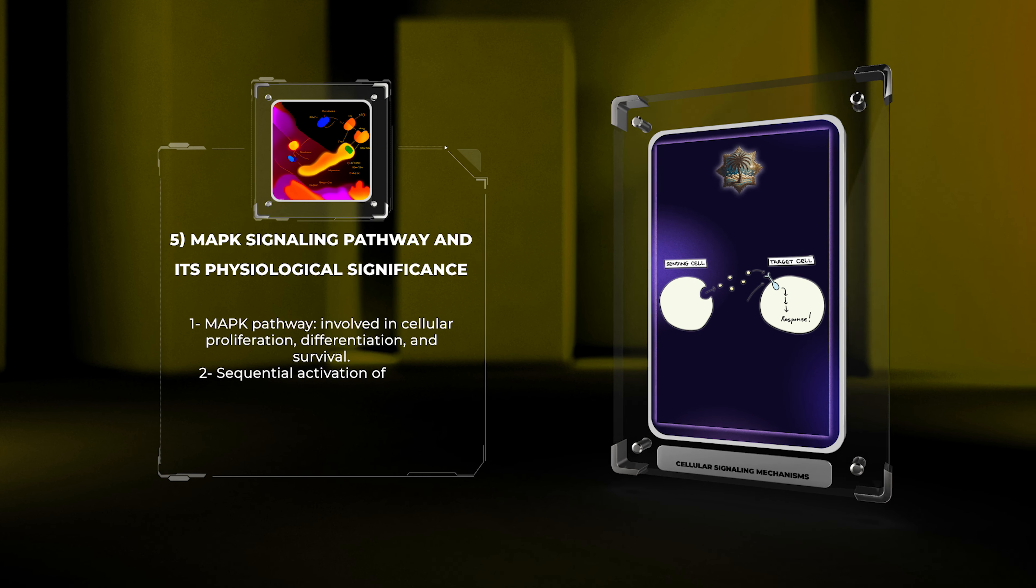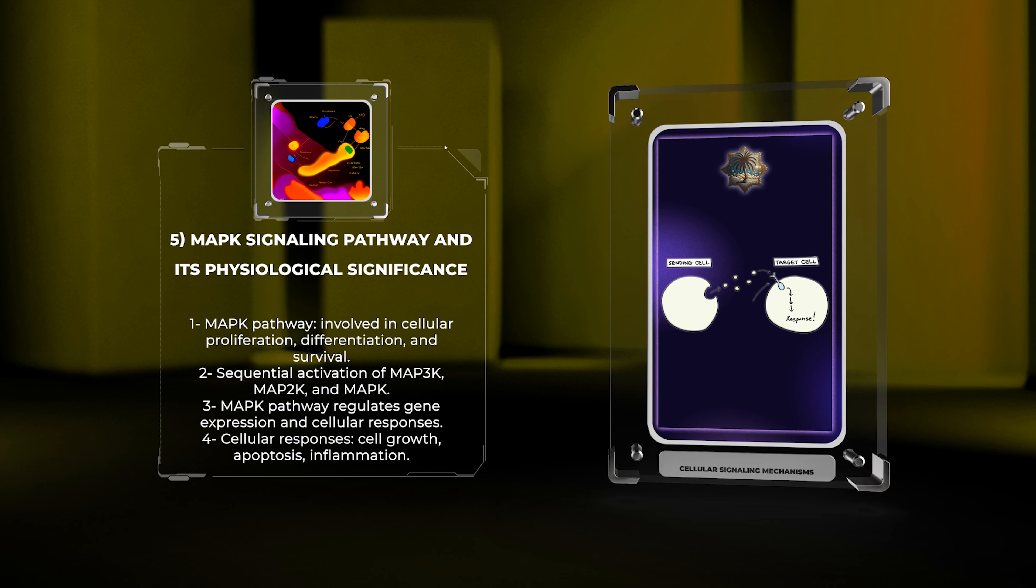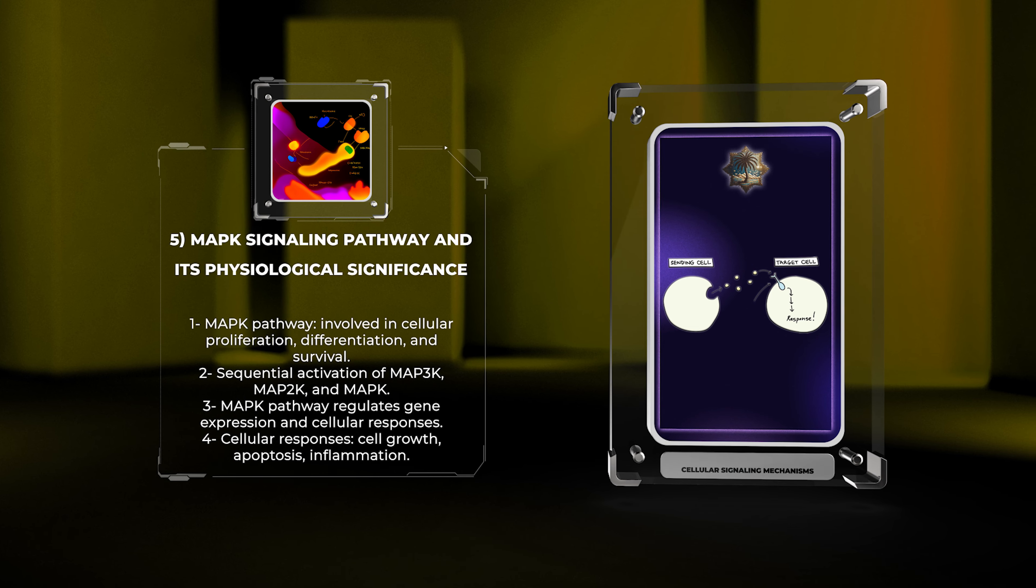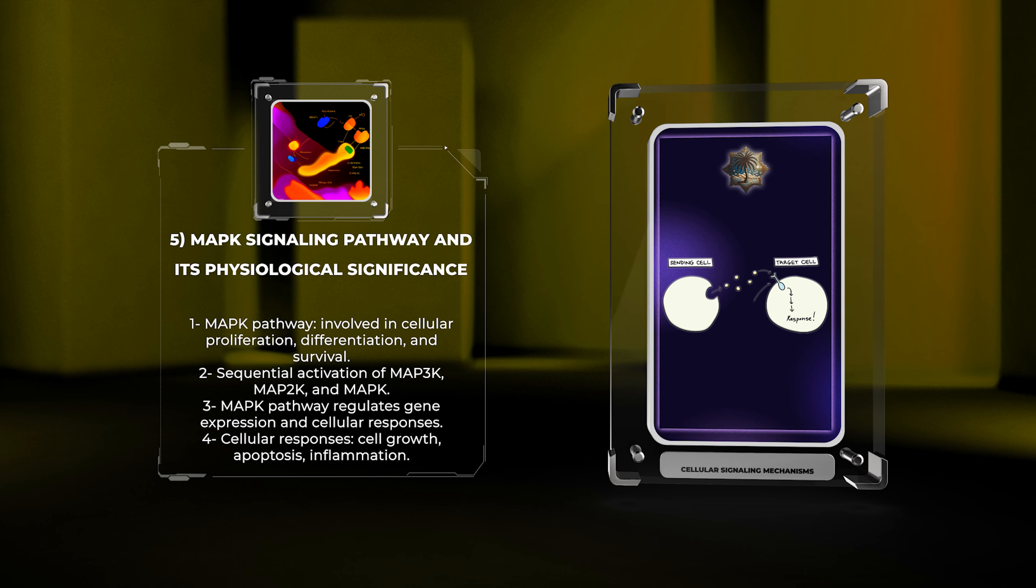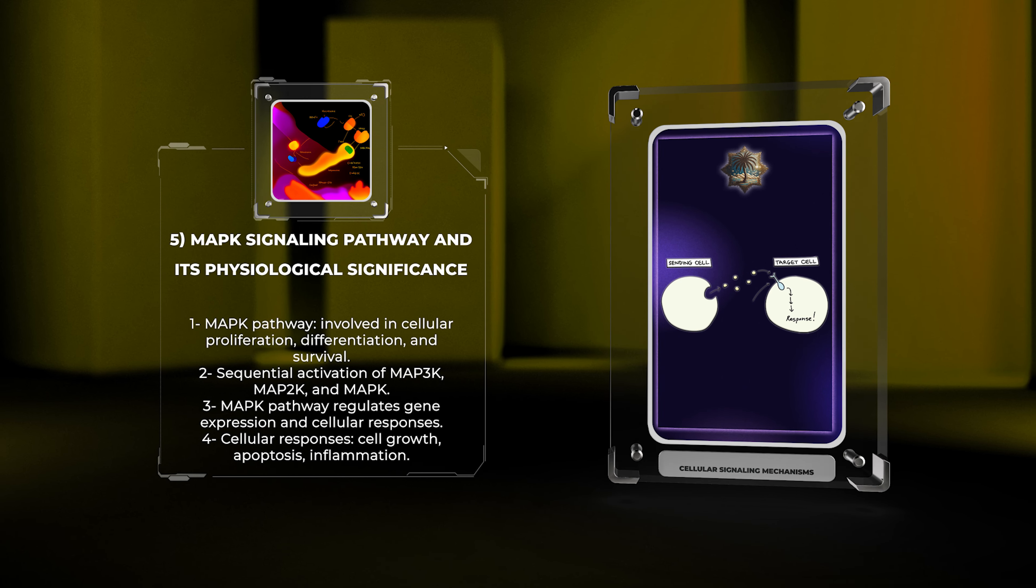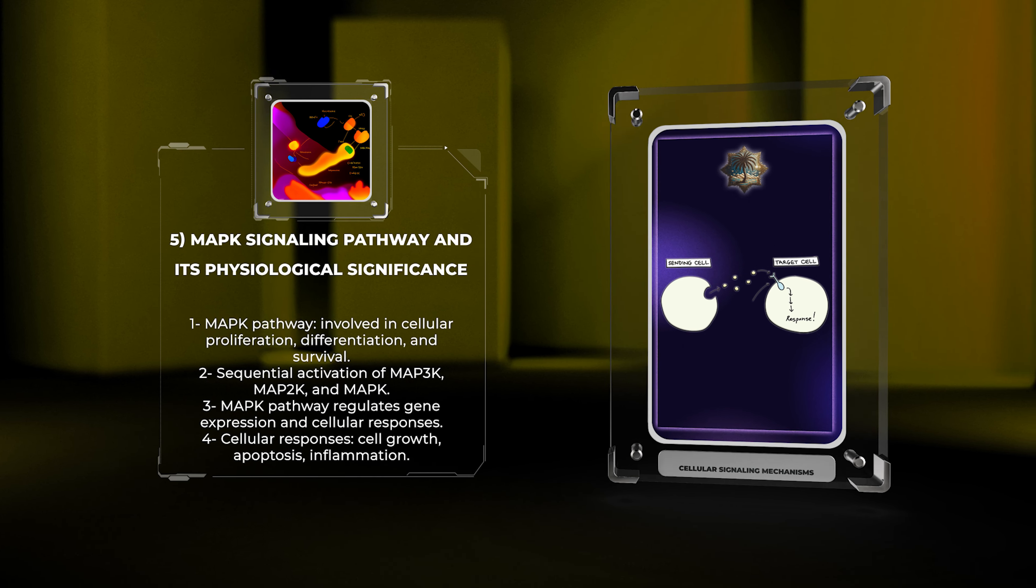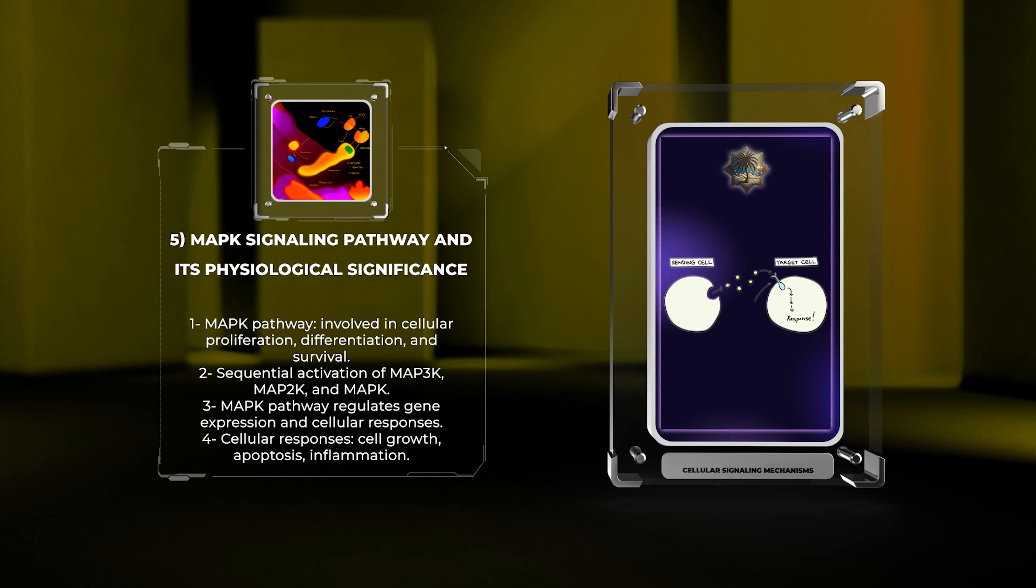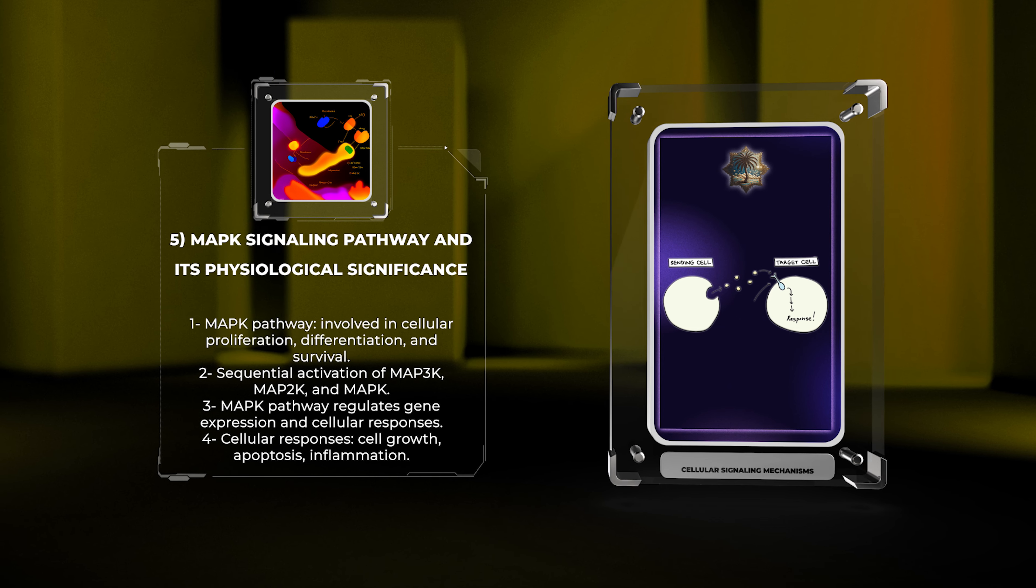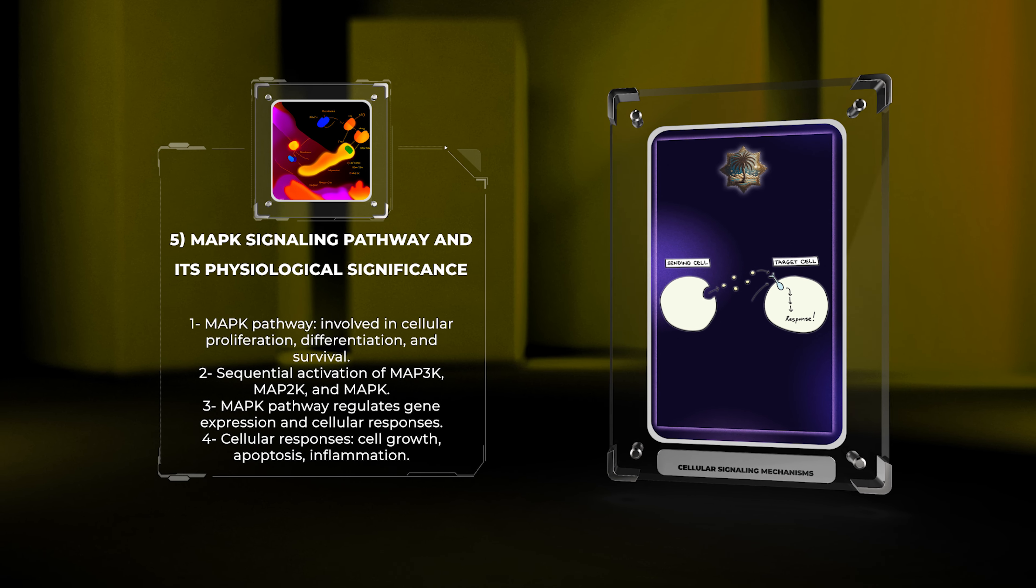The mitogen-activated protein kinase (MAPK) pathway is a highly conserved signaling pathway involved in cellular proliferation, differentiation, and survival. It is activated by the sequential activation of several kinases, namely MAPK kinase kinase (MAP3K), MAPK kinase (MAP2K), and MAPK. These kinases phosphorylate and activate downstream transcription factors and other effector molecules, regulating gene expression and cellular responses, such as cell growth, apoptosis, and inflammation.